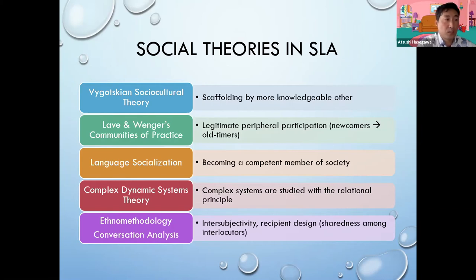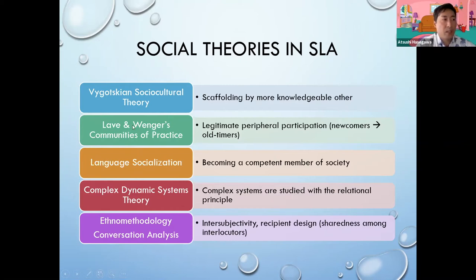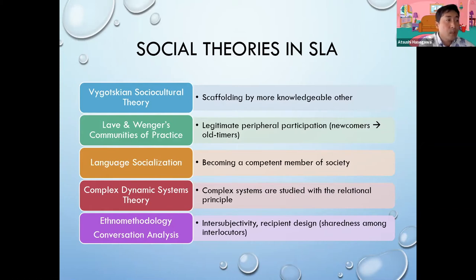For example, Vygotskian sociocultural theory and its concept of ZPD — zone of proximal development — presumes that the developmental process of a less knowledgeable person, such as children and learners, occurs with the assistance provided by more knowledgeable others, such as adults, teachers, and peers. Similarly, Lave and Wenger's communities of practice framework emphasizes an apprenticeship model and tries to capture how newcomers in a community change their participation as they go through the process of becoming old-timers. While these frameworks provide useful theoretical perspectives, they did not get into details of human relationships beyond what appears to be presumed by the theories — hierarchical relationships are mostly stressed for the illustration of how development occurs.